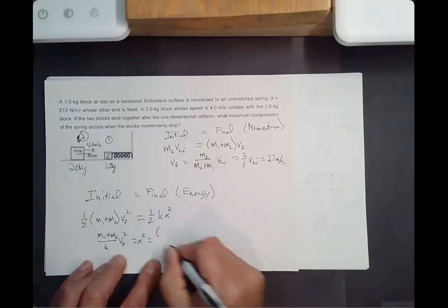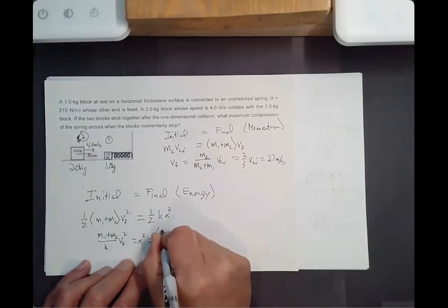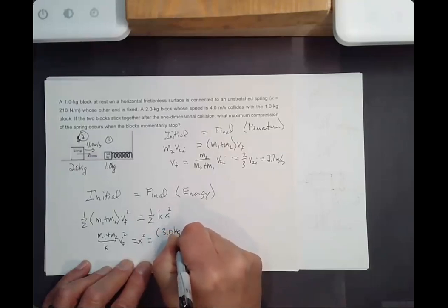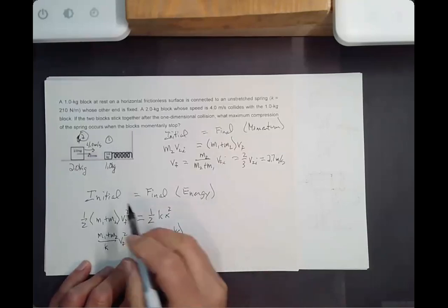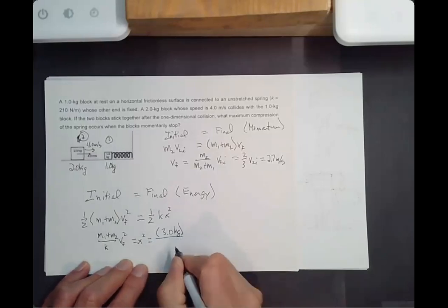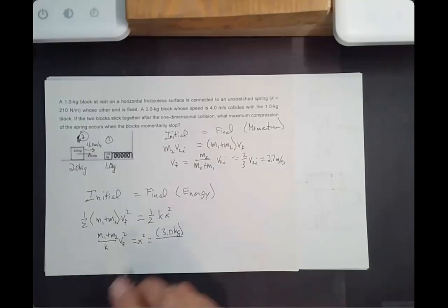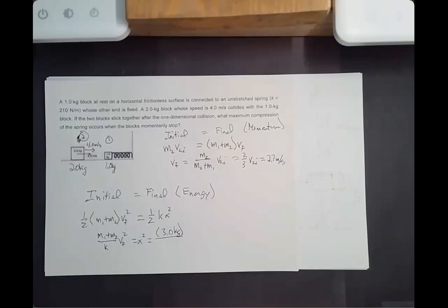Now I'll plug in the numbers. I'll have 3.0 kilograms — that's the combined mass — divided by K, which is 210 newtons per meter, times V_final squared, which is 2.7 meters per second squared. Let me check the units: on top we'll have kilogram·meter²/second², on the bottom newtons per meter — a newton is kilogram·meter/second² — dividing by a meter, the units reduce to meters squared. Good — this is a length squared.